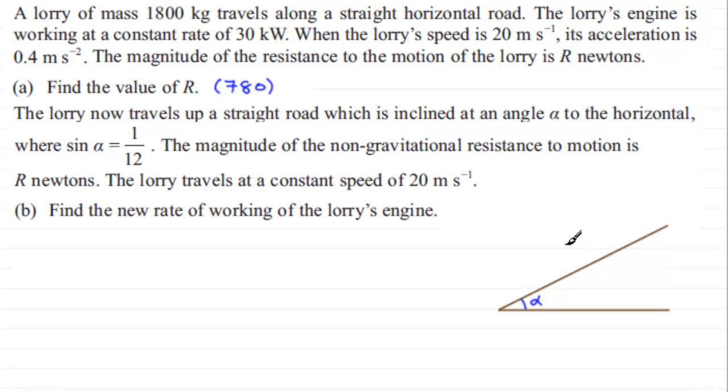We'll draw our lorry in, just as a simple block here. We know its mass is 1,800 kilograms. So if we just draw its weight in down here, that weight is going to be 1,800 times the acceleration due to gravity, g, and that would be measured in newtons.